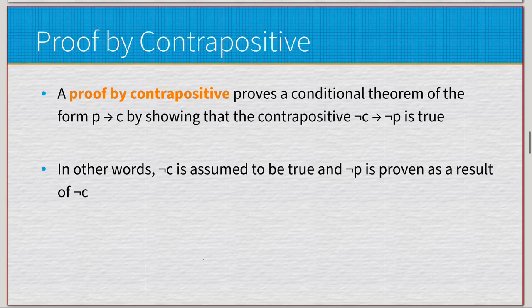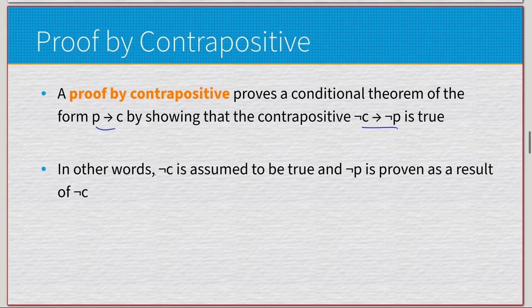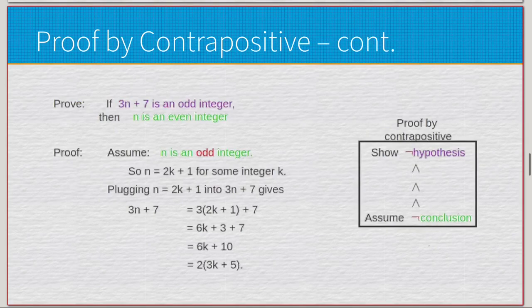Similarly, proof by contrapositive proves a conditional statement of the form P implies C by showing that the contrapositive — negated C implies negated P — is true, because these two are logically equivalent. In other words, negated C is assumed to be true and negated P is proven as a result. We kind of work backwards — we assume a negation of the conclusion and want to show a negation of the hypothesis.